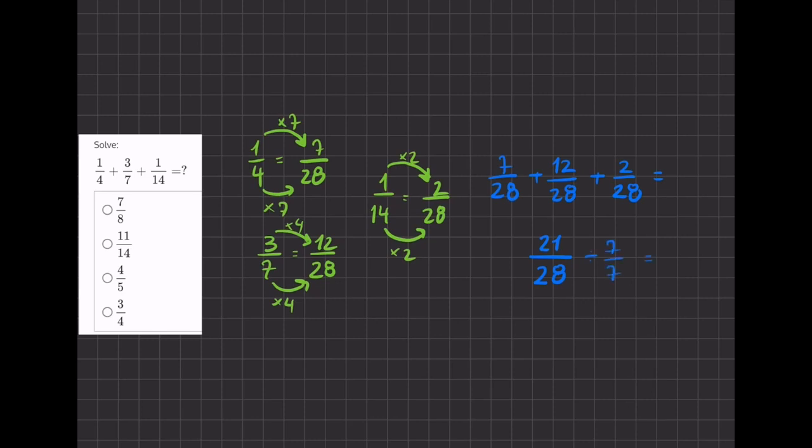If we divide 21 by 7, we get 3, and if we divide 28 by 7, we get 4. So 3/4 is our final simplified answer.